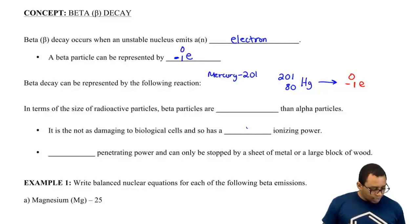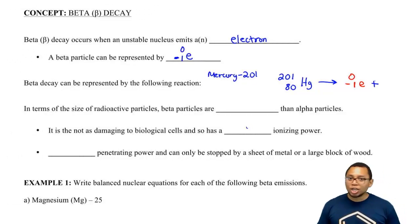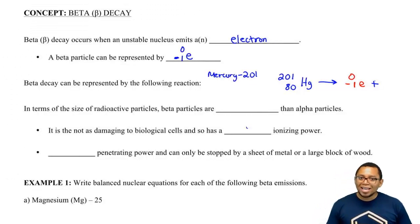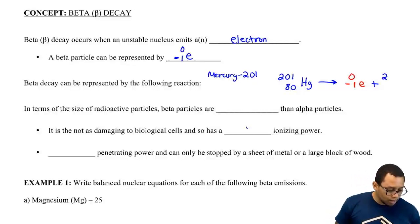Now remember, your atomic masses have to equal each other on both sides of the arrow and your atomic numbers as well. Here, the electron has no mass, so the new element is going to have a mass of 201.